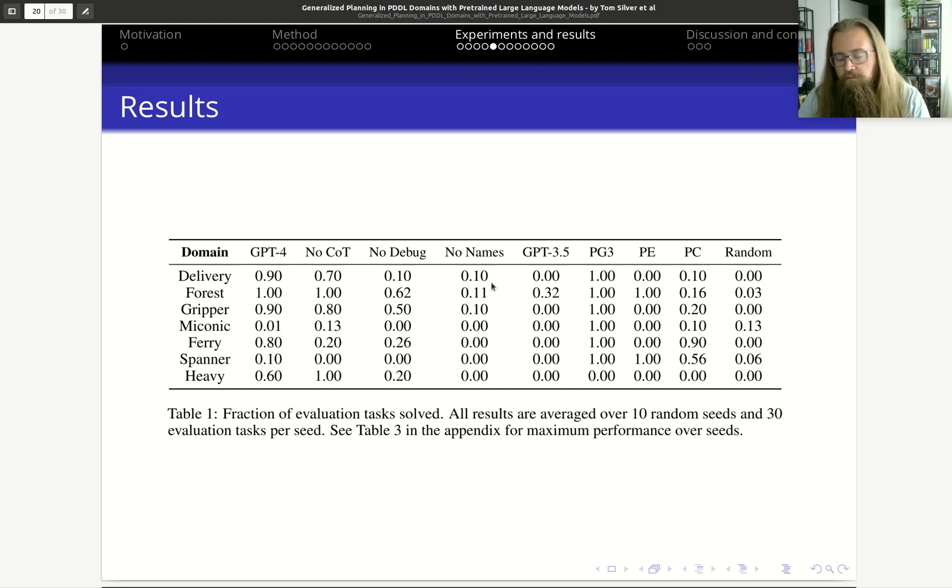This could be the reason for different things. For example, if you would give a human a domain where you just change the names, they probably wouldn't be able to understand it very easily. It would be much more difficult to understand it. So it kind of has the same intuition as in humans. But on the other hand, a symbolic planner like PG-3 would definitely be able to handle a case where the names are changed, basically.